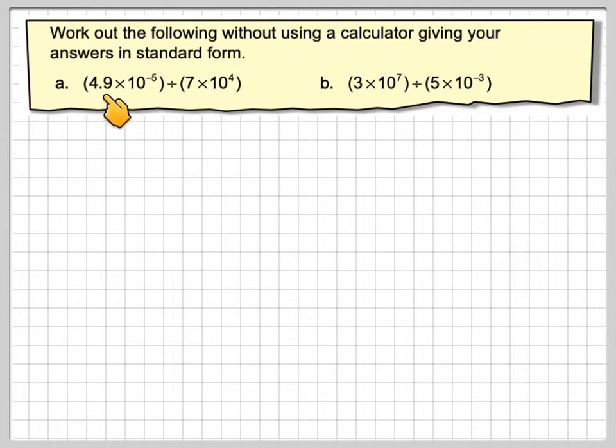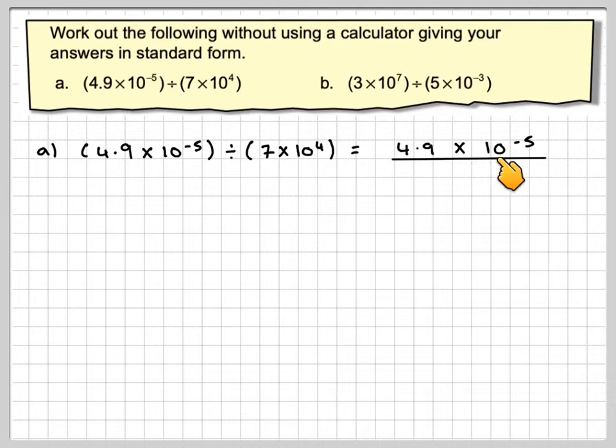Now remember, in standard form this number here must be between 1 and 10, and this number here is an integer, positive or negative. For the first one, I like to write these as fractions rather than use the division sign. So it's 4.9 times 10 to the minus 5 over 7 times 10 to the 4.